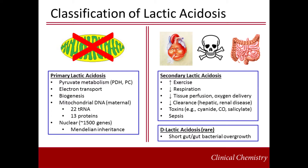Lactic acidosis may be classified in many different ways. In one scheme, the mechanisms of lactic acidosis are divided into primary and secondary causes. Primary causes are those that directly impact the integrity or function of the mitochondrial apparatus. These include mutations in the mitochondrial genome that encodes mitochondrial transfer RNA and 13 polypeptides. Approximately 1,500 nuclear genes provide translated products that function within the mitochondrion. Two of these genes encode critical enzymes that metabolize pyruvate: pyruvate dehydrogenase (PDH) and pyruvate carboxylase (PC). Mutations in these genes commonly cripple mitochondrial function.